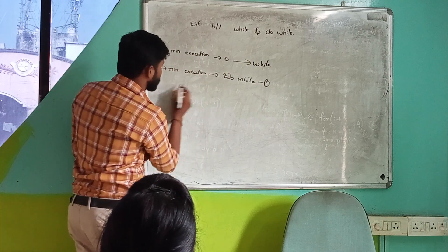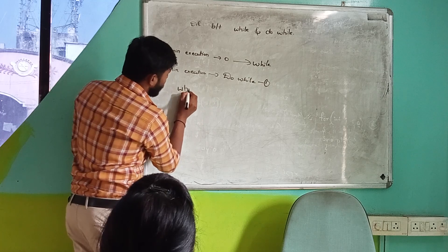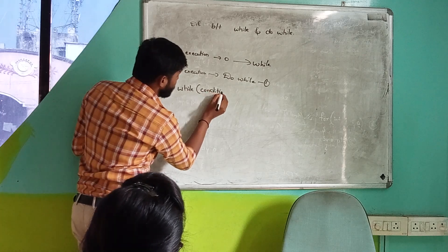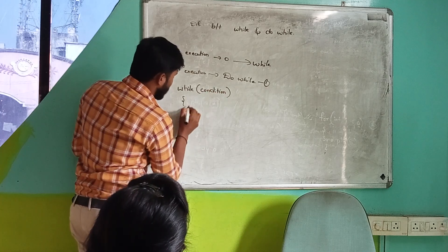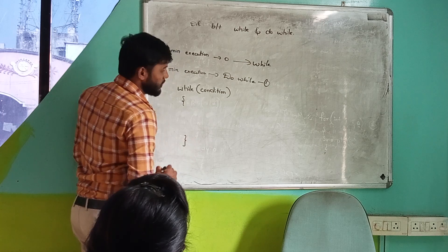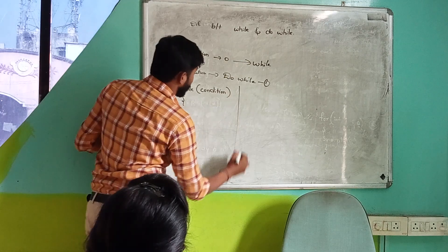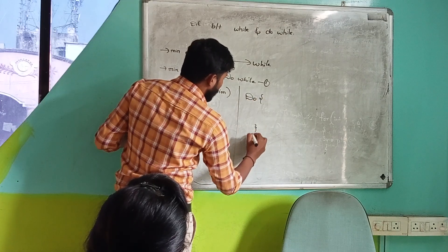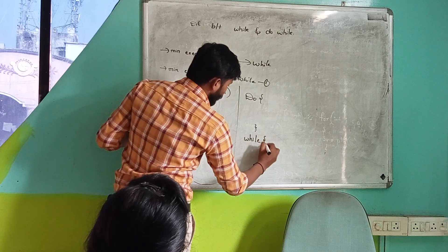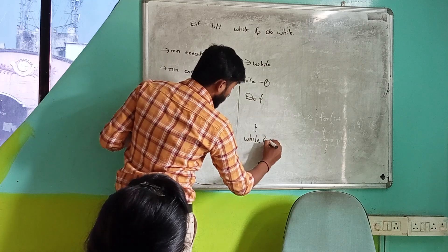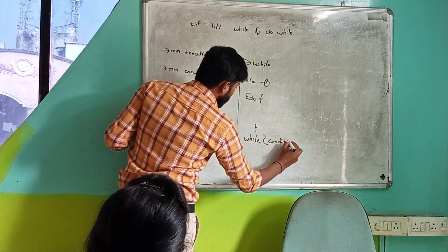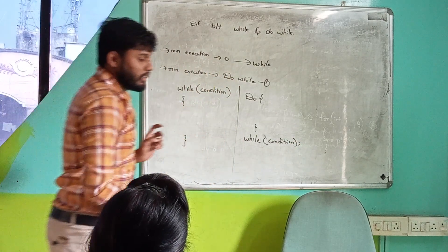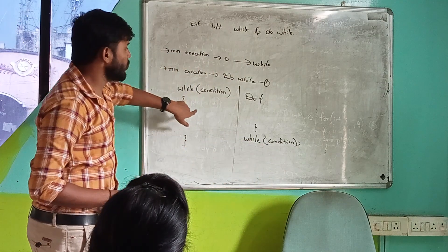First we need to know about the syntax. The while loop syntax follows the while keyword, then the condition inside parentheses — open and closed. For do-while, it follows the do keyword first, then the body, then while with the condition in parentheses, and ends with a semicolon.